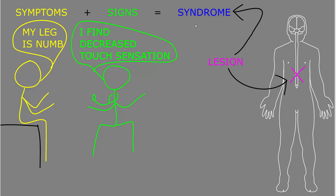Neurological syndromes may be caused by one or more neurological disorders, which are diseases that cause a lesion somewhere in the nervous system.